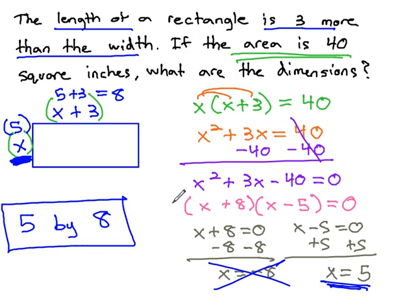In this five by eight rectangle, the length is three more than the width, eight is three more than five, and the area is forty square inches. Five times eight is forty. We found that size by letting our sides be represented algebraically as x and x plus three, and multiplying them to equal the area. Solving that equation gave us our solution for the problem.